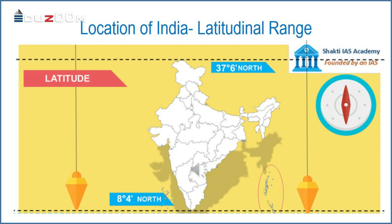When you want to identify the geographical location of a country in the world, it is very important to identify its latitudinal and longitudinal range. If you look at the diagram, you can find that the latitudinal range of the mainland of India extends between 8 degrees 4 minutes north and 37 degrees 6 minutes north latitudes.